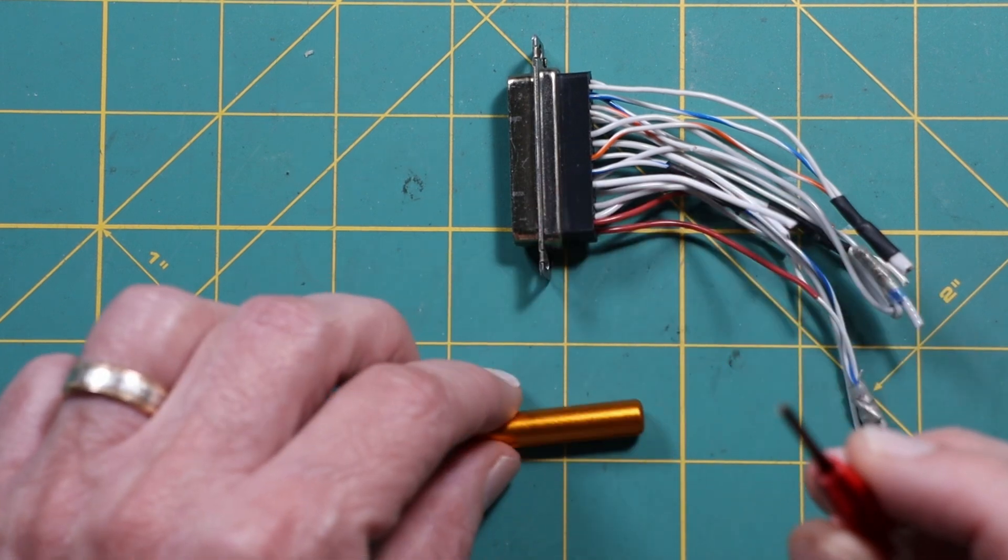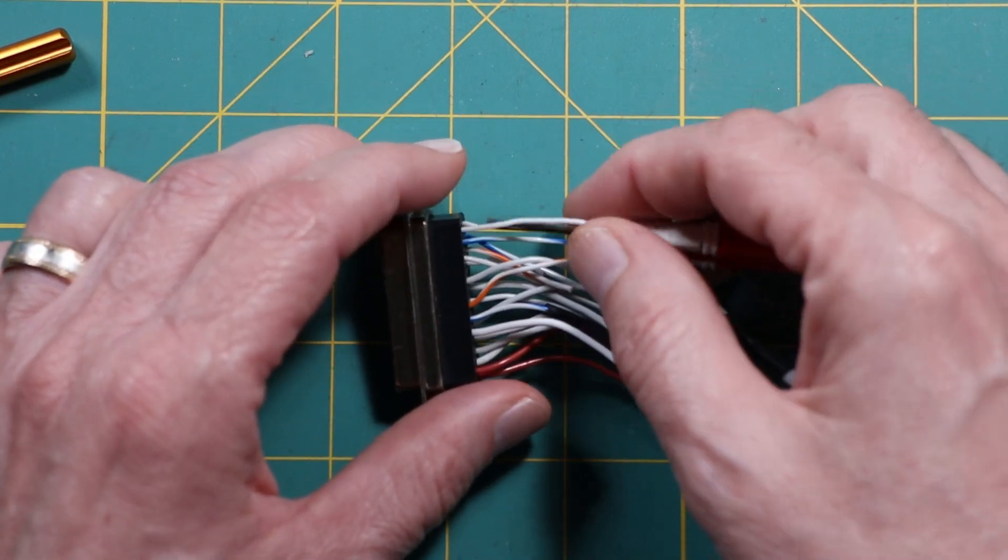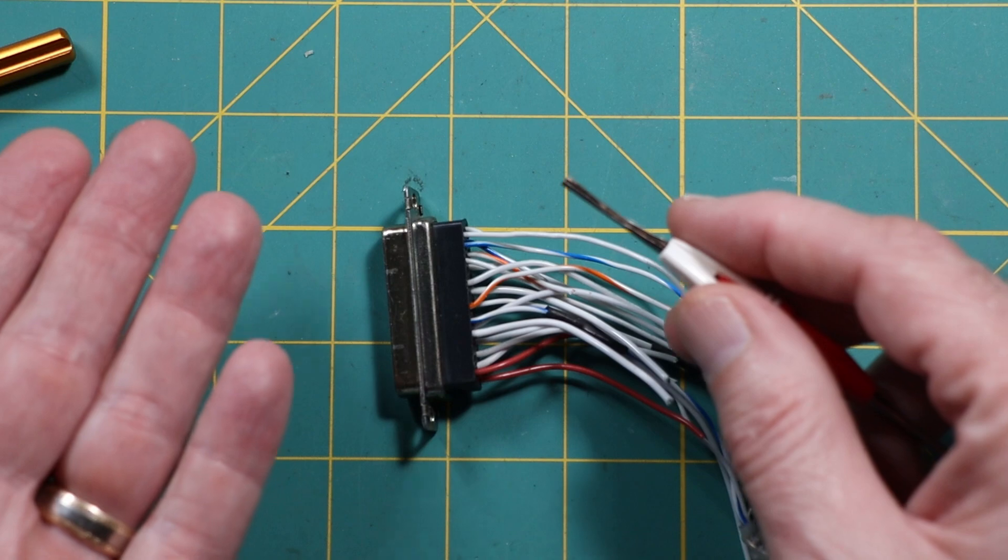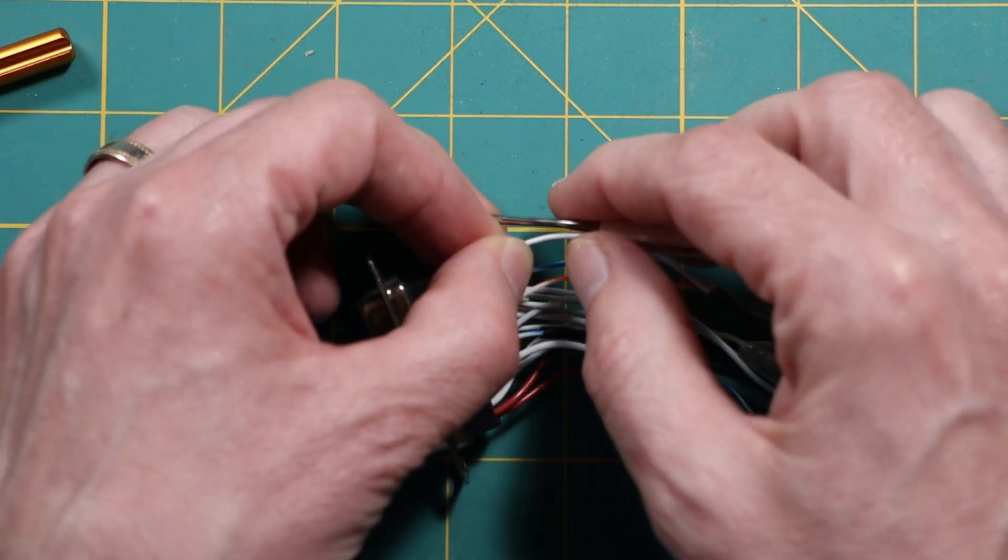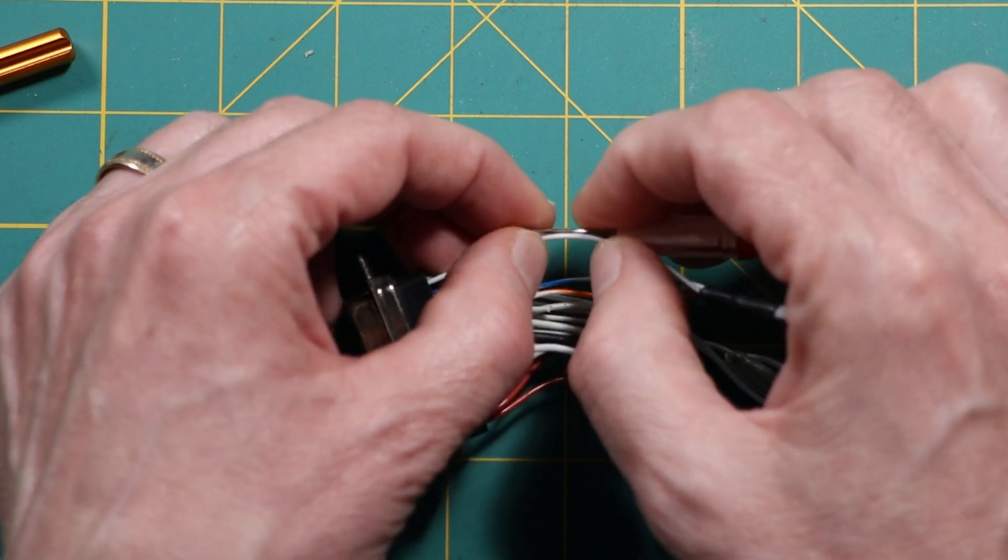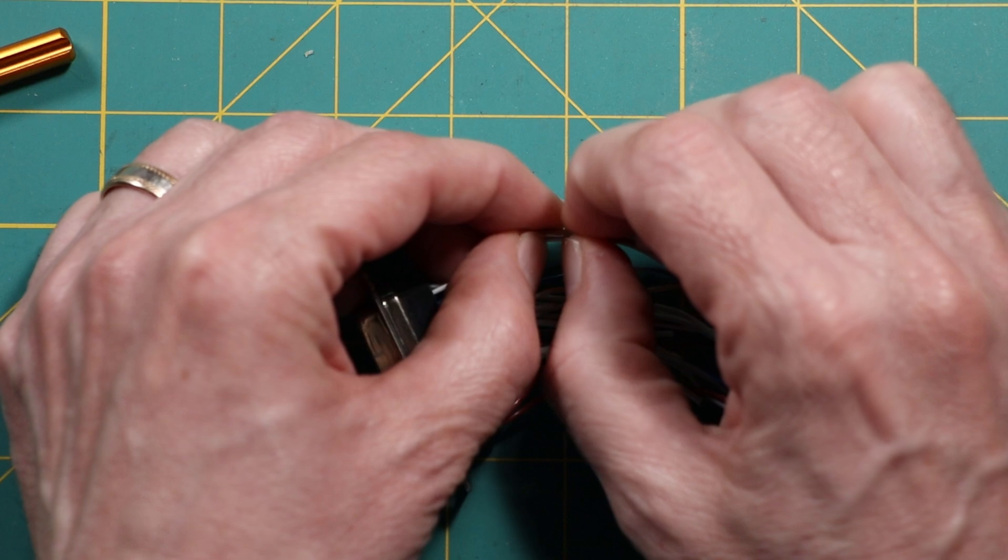So let me first show you the correct way to use the tool to remove a pin, which is pretty much the way that I was showing you for inserting but I got them backwards. And so you have to push the wire into the channel, which I find to be rather fussy.